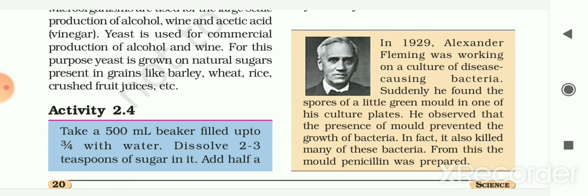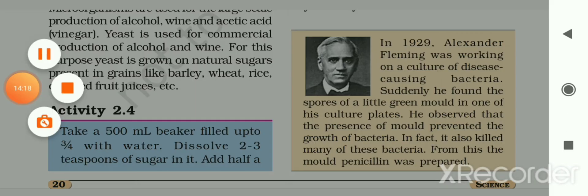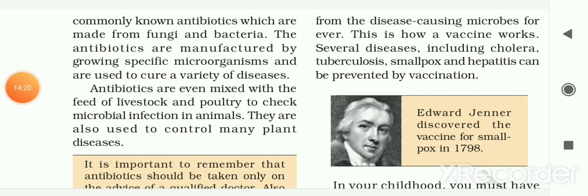In 1929, Alexander Fleming was working on a culture of disease-causing bacteria. He found the spores of a little green mold in one of his culture plates. He observed that the presence of the mold prevented the growth of bacteria and in fact killed many of them. From this mold, the antibiotic penicillin was prepared. Commonly used antibiotics are made from fungi and bacteria.